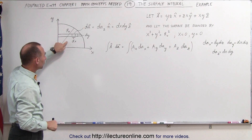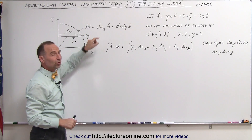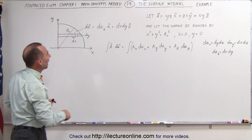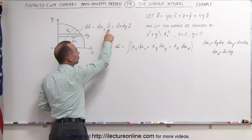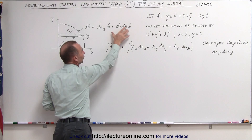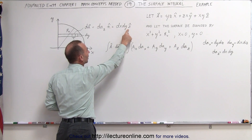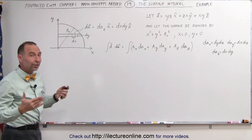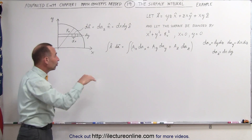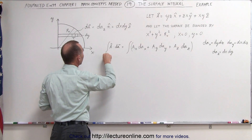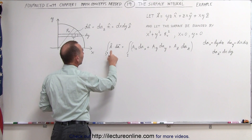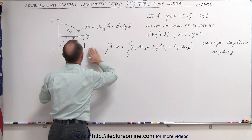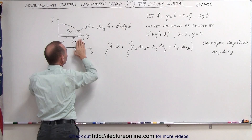The area element can be defined as dA-sub-z, which means projected onto the xy plane, multiplied times the unit vector. This can also be written as dx times dy with the unit vector in the positive z direction. Integrating this over the surface — we put a little s underneath because we're doing a surface integral — it'll be the vector field multiplied times a small area, integrated over the entire surface.